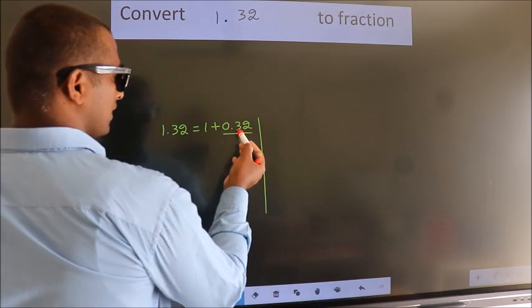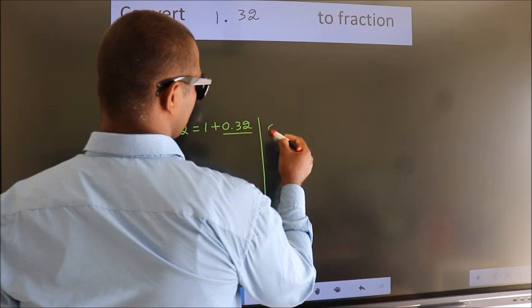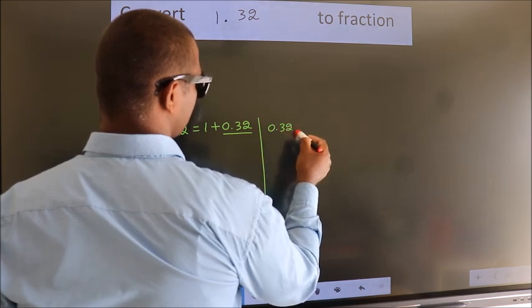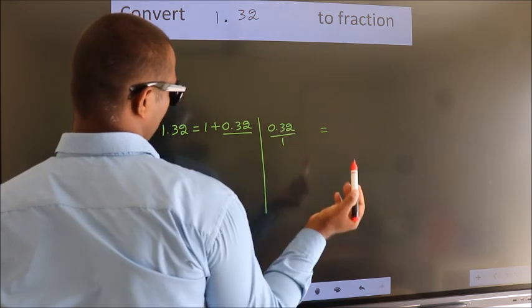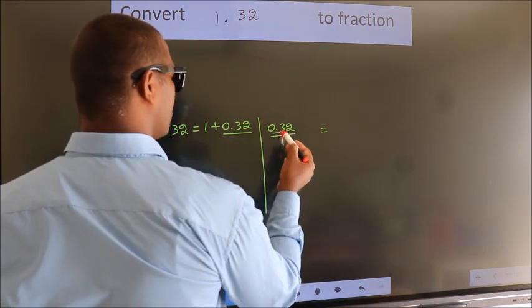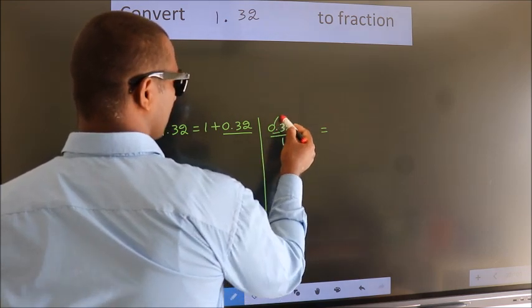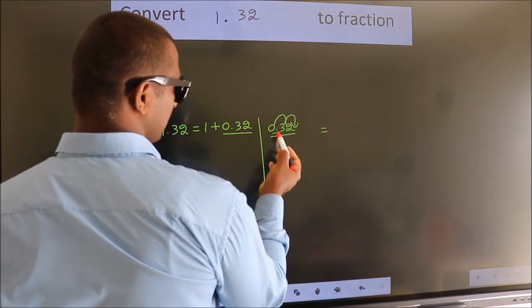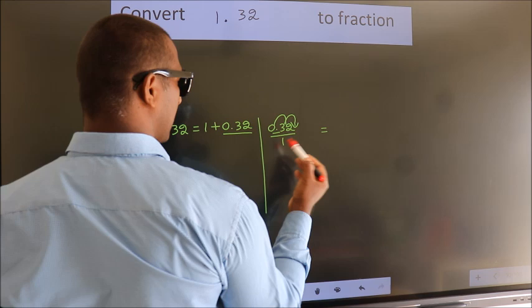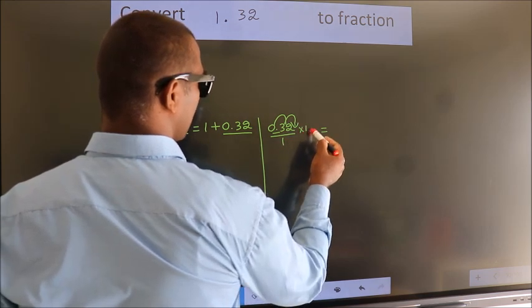Convert this to a fraction. So 0.32 here. To convert this to a fraction, we have to move this decimal after two numbers. To move this decimal after two numbers, we should multiply it with 100.